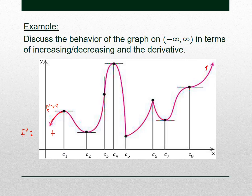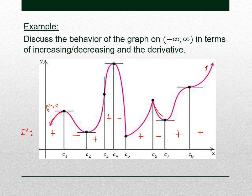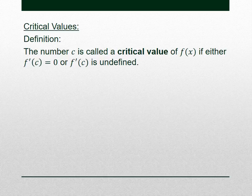From C1 to C2, we're decreasing, so the first derivative is negative. From C2 to C3, we're increasing, so the first derivative is positive. From C3 to C4, still increasing — positive. C4 to C5, decreasing — negative. C5 to C6, increasing — positive. C6 to C7, decreasing — negative. C7 to C8 and C8 out to infinity, we're increasing. That's how we read off what the first derivative is doing from the graph: increasing means positive, decreasing means negative.